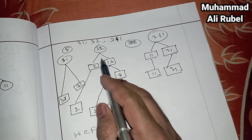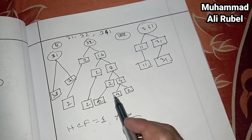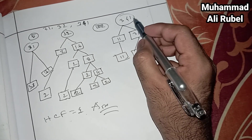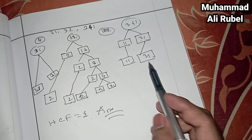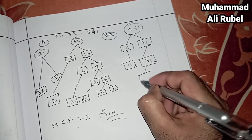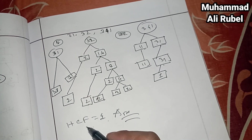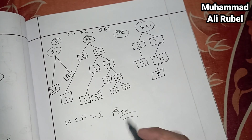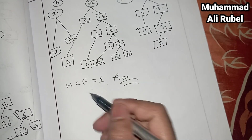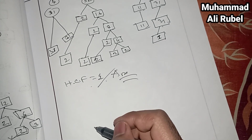Continuing with 32: 2 times 4 equals 8, and 2 times 2 equals 4. For 341: 11 times 31. And 31 cannot be divided except by 1 — it's a prime number. Since 1 is not a prime number, we cannot find any common prime factor. So the HCF is only 1.